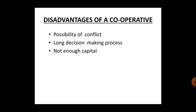Disadvantages of cooperative societies include: conflict may arise among members on issues of sharing responsibilities and exercising authority; long decision-making process due to government involvement; sometimes finance is limited; specialist services cannot be taken, as the members manage the whole show and may not be competent enough; members in positions of power may try to take personal advantages, leading to corruption; and members being employed elsewhere may not be able to devote the necessary attention and adequate time for supervising the work of the cooperative enterprise.